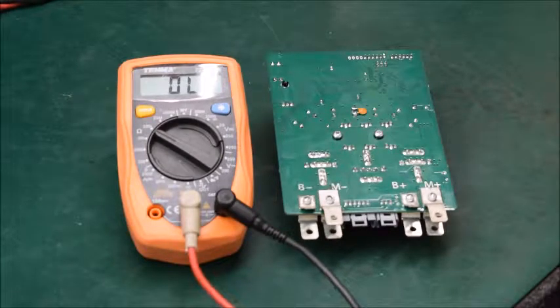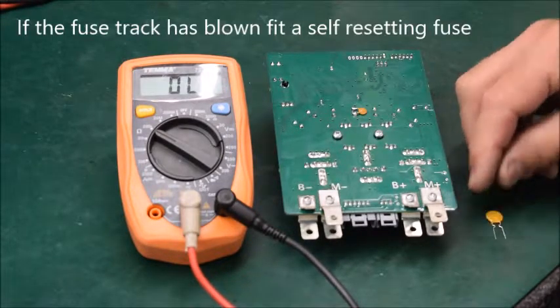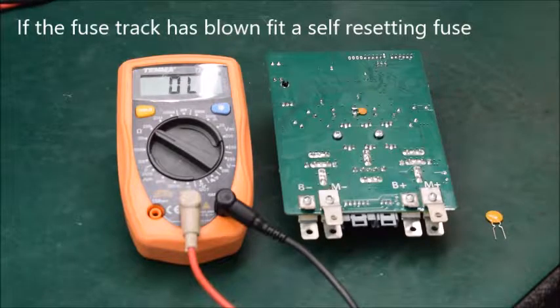If the fuse track has blown you can repair them by soldering some 1 amp fuse wire across these holes or by fitting a self resetting fuse like this. These are available on our website.